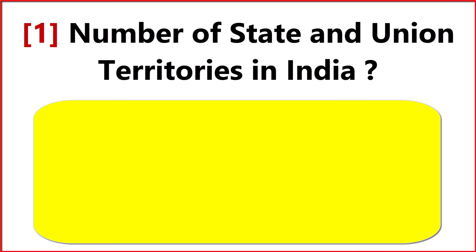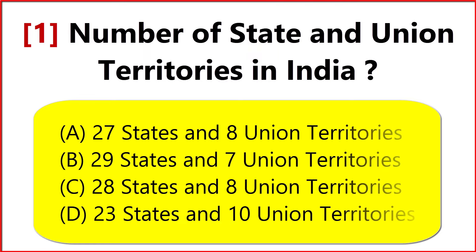Number of States and Union Territories in India. Option C: 28 States and 8 Union Territories.